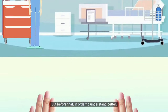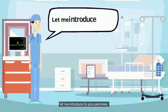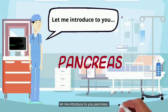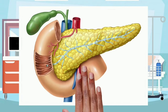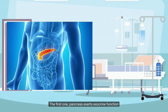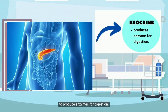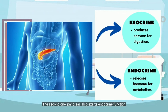But before that, in order to understand better, let me introduce to you the pancreas. There are two main functions of the pancreas. The first one, the pancreas exerts an exocrine function to produce enzymes for digestion. The second one, the pancreas also exerts an endocrine function to release hormones for metabolism.